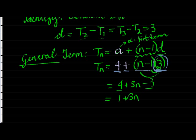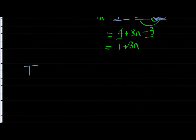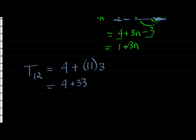In our case, we want T12. Which means I started with four, and I added the constant difference eleven times. Okay, which is just four plus thirty-three, which is thirty-seven. You can see it's exactly what I would have gotten here if I substituted the n with twelve.